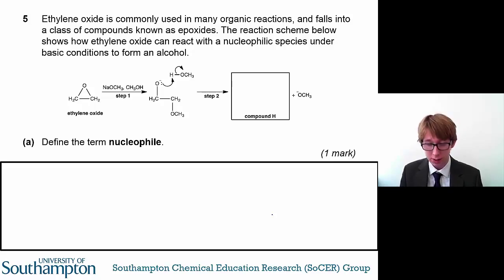then you should be able to have a really good go at this question. So this focuses on ethylene oxide, which is an epoxide, and the reaction of it with sodium methoxide and methanol. The reaction scheme below shows how ethylene oxide can react with a nucleophilic species under basic conditions to form an outcome.